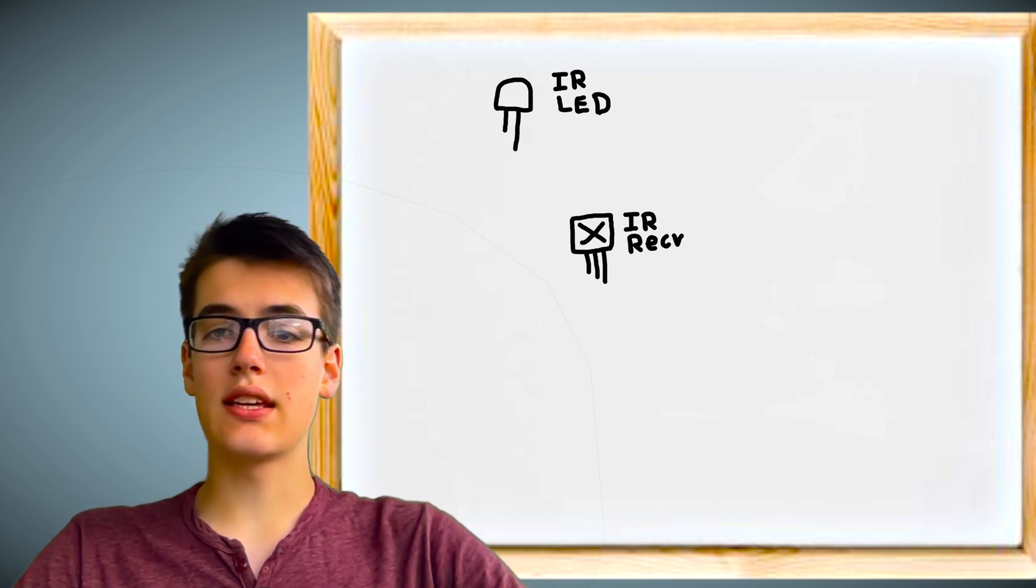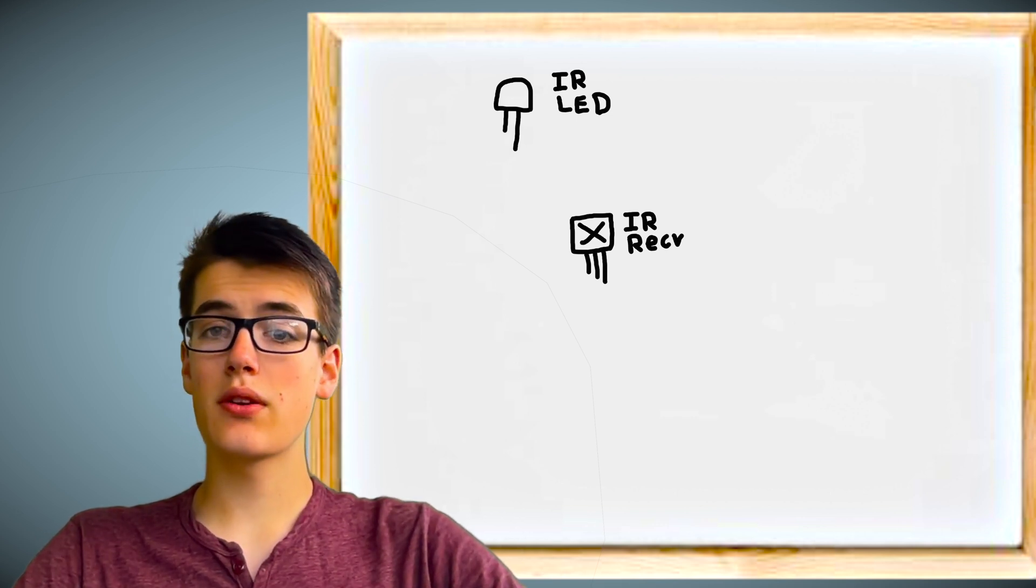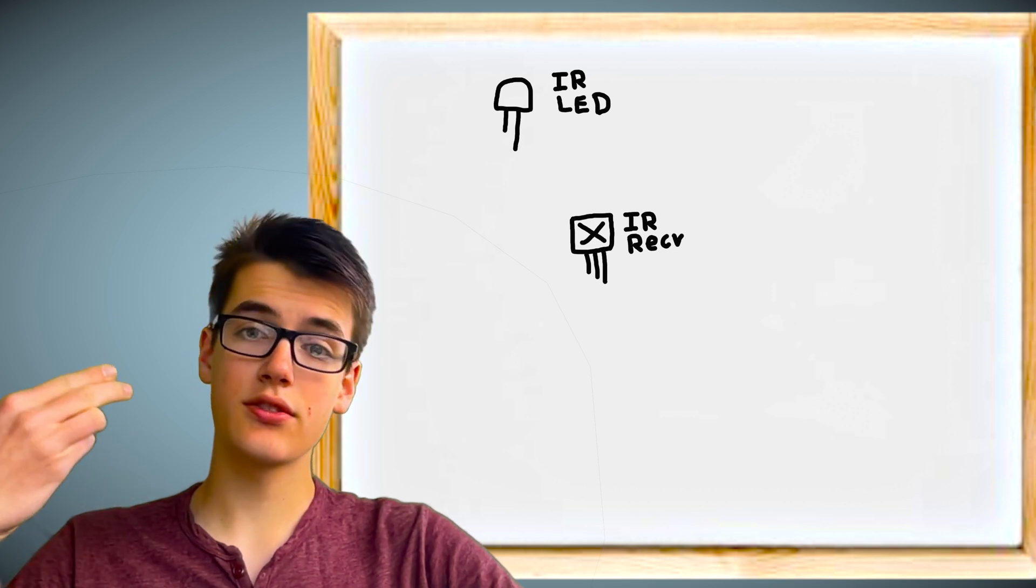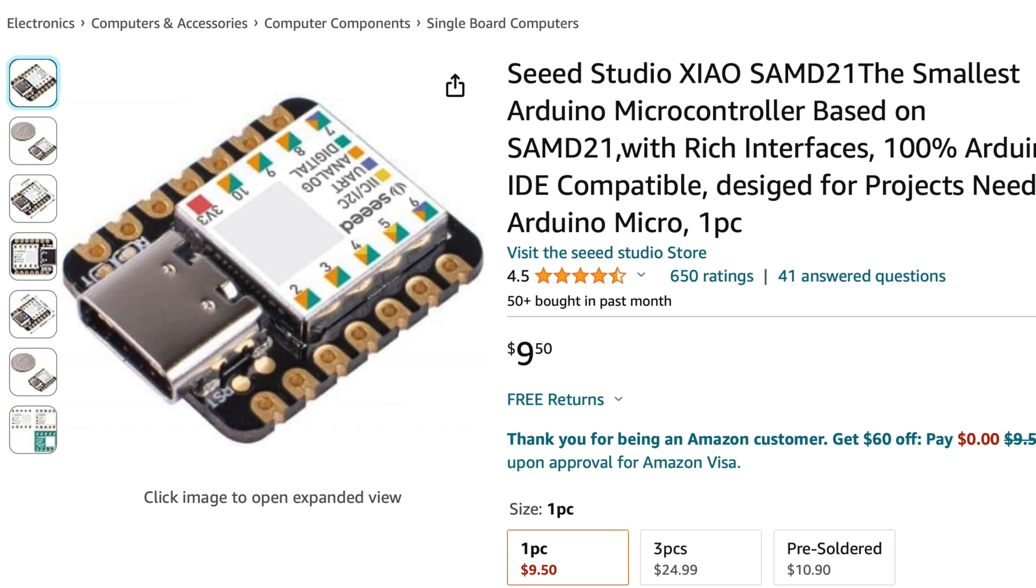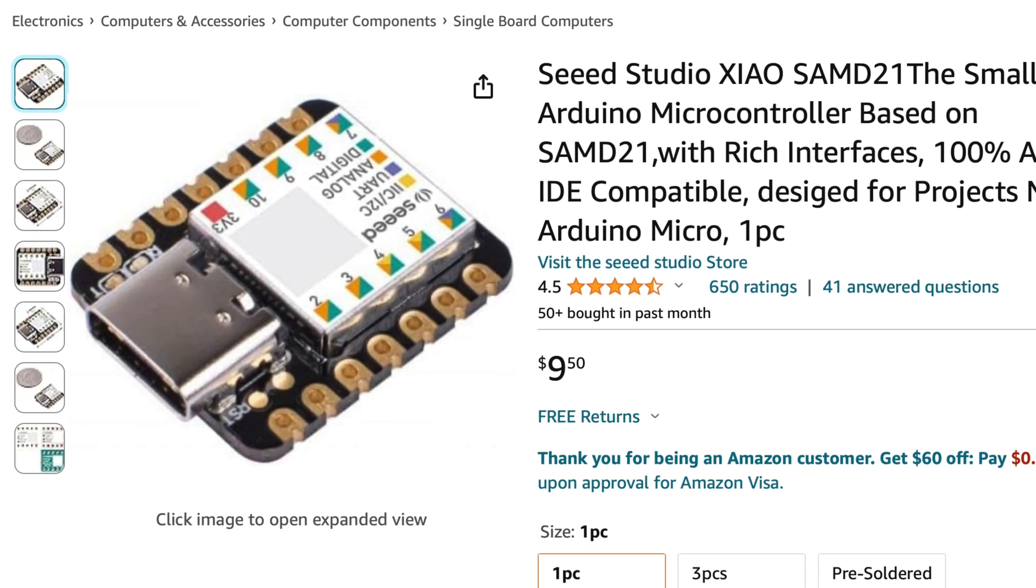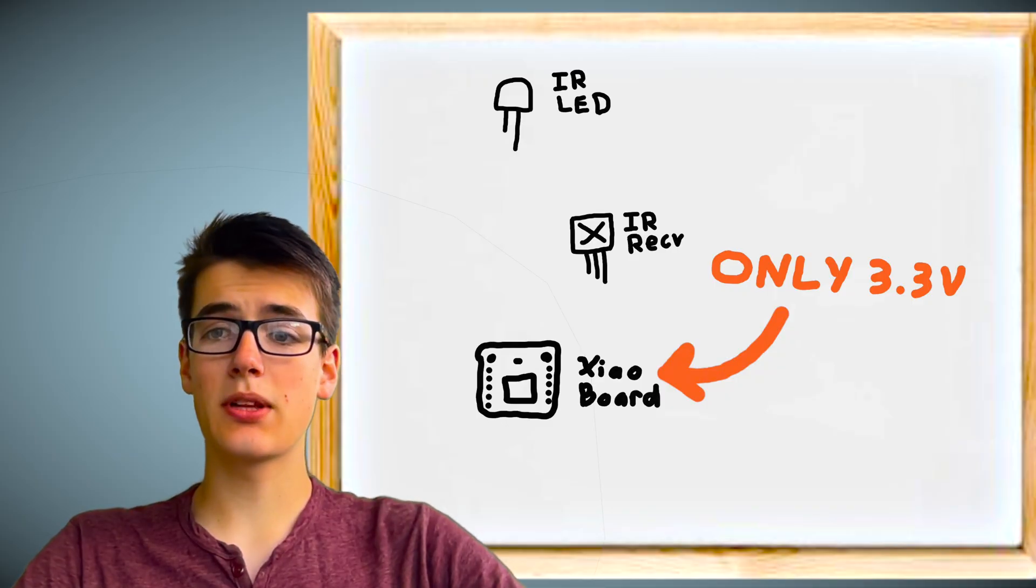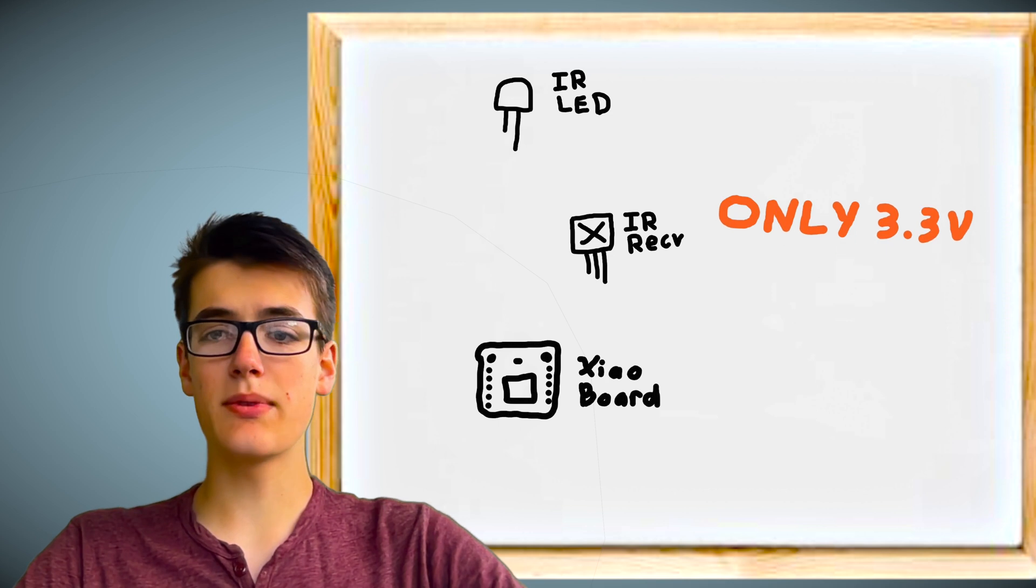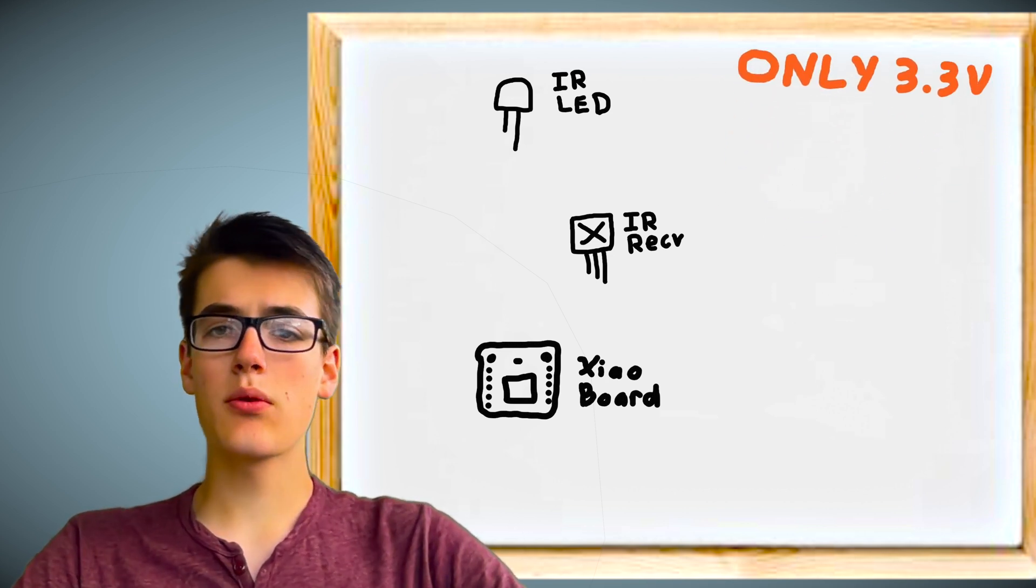Now we're going to need a smaller Arduino board than anything we've used before, but also one with a good amount of program space so we can store a complex program plus remote codes. So I'm going to get the Seeeduino XIAO, which has a large amount of flash storage and 11 pins that can be either digital, analog, or for 10 of them PWM. It does only supply 3.3 volts of power off of each of these pins, so we need to make sure we only use Arduino components that can run off of 3.3 volts.